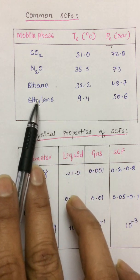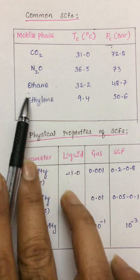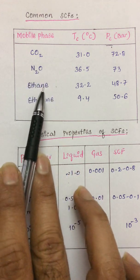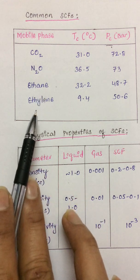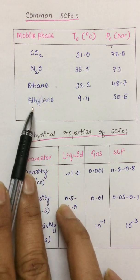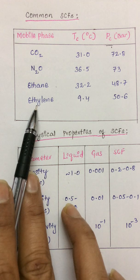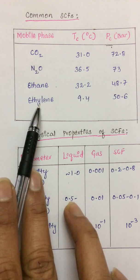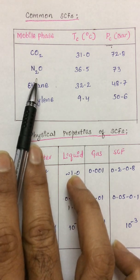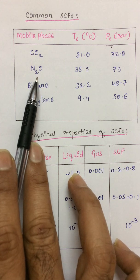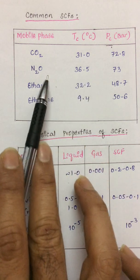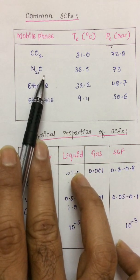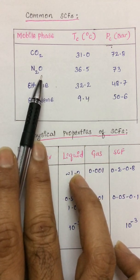The reason is ethane and ethylene are organic compounds and these are highly inflammable, so usage is limited. When it comes to nitrous oxide, nitrous oxide also has accessible critical temperature and pressure, but the important limitation is at critical point it can become explosive.